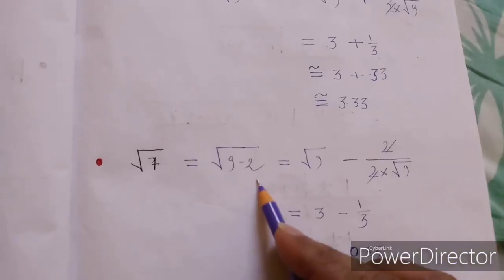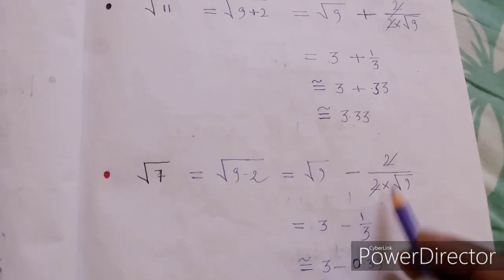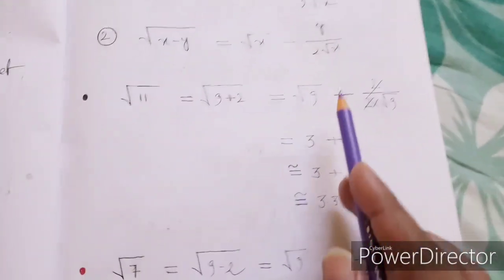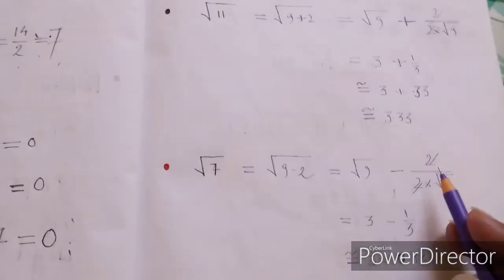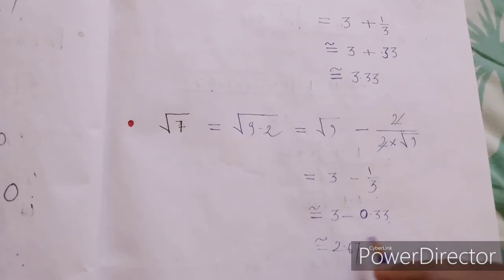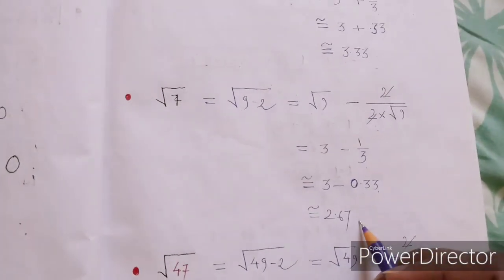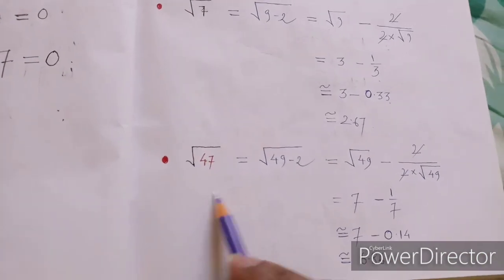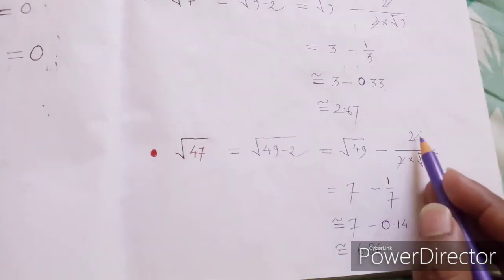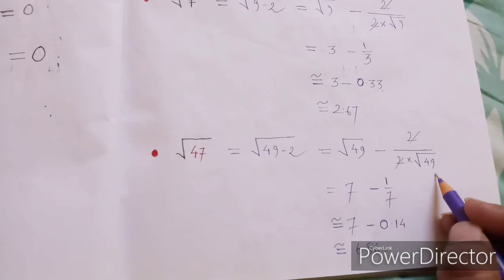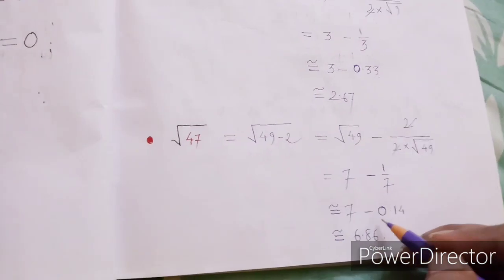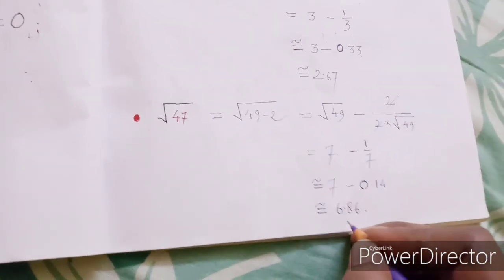Similarly, √7 = √(9-2). Here 9 is the nearest perfect square to 7. Using the second formula: y/(2√x) = 2/(2×√9), the 2s cancel giving 1/√9 = 1/3 ≈ 0.14. So √7 ≈ 7 - 0.14 ≈ 6.86.